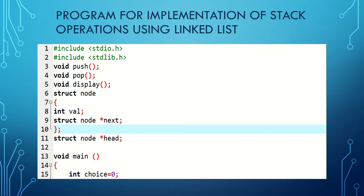Now let's see the coding for implementation of stack operations using linked list. These two are the header files, and void push, void pop, void display are the operations of stack. To create the node in the linked list, struct is used to store multiple related items. The node contains two values: data as an integer, and struct node pointer next to store the address of the next node.